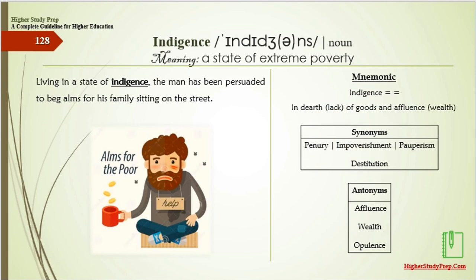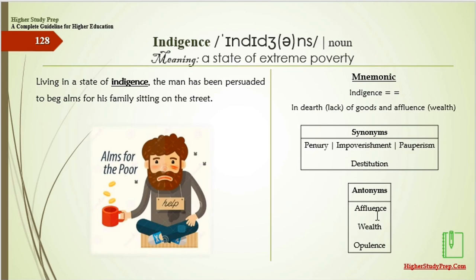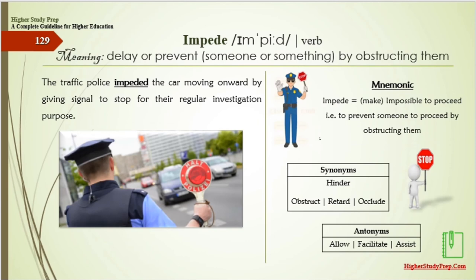Indigence means a state of extreme poverty. Mnemonic: indigence — in dirt or lack of goods and affluence. Synonyms are penury, impoverishment, pauperism, or destitution. Living in a state of indigence, the man has been persuaded to beg alms for his family while sitting on the street. The antonyms are affluence, wealth, or opulence.